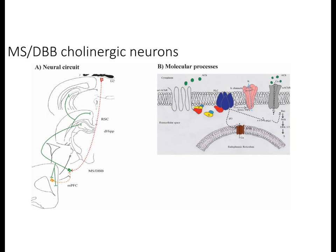MSDBB cholinergic neurons project to the dorsal hippocampus and seem critical for contextual fear memory and contextual fear extinction memory. Studies using optogenetic and pharmacological manipulations support this, though permanent lesion studies see no effect, and the reason for the discrepancy remains unknown. Interestingly, MSDBB cholinergic neurons are also critical for acquisition of fear extinction in a novel way: animals with lesions cannot distinguish contextual fear between contexts, leading to generalized fear, high baseline freezing during extinction training, and high levels of fear during extinction testing.